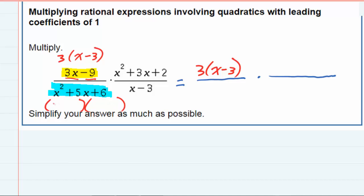x squared has to be x and x to get x squared. And I'm looking for two numbers that multiply to give me a positive 6 but add up to 5. So I can use plus 3 and plus 2.